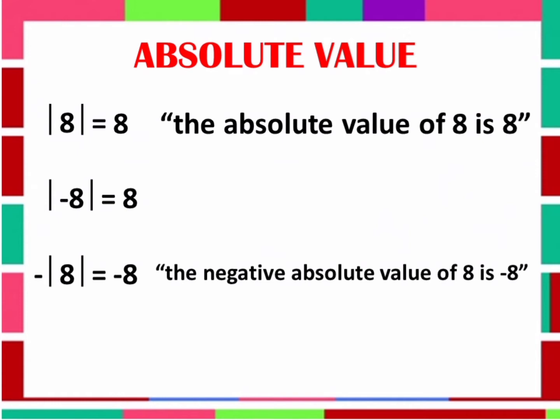Let me discuss it further. The Absolute Value inside the two bars is positive 8. But since we have a negative sign outside the Absolute Value, that is the reason why our final answer becomes negative 8. Similarly, the negative Absolute Value of negative 8 is equal to negative 8. The Absolute Value of negative 8 inside the two bars is 8, but since there is a negative sign outside the Absolute Value, it becomes negative 8.